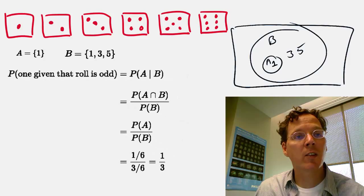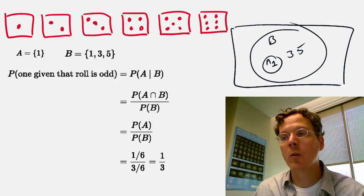So that works out to be 1 sixth, and then the probability of B in the denominator works out to be 3 sixths, 1 sixth for each of the three mutually exclusive possibilities, which works out to be 1 third, which is what we knew had to be the answer.